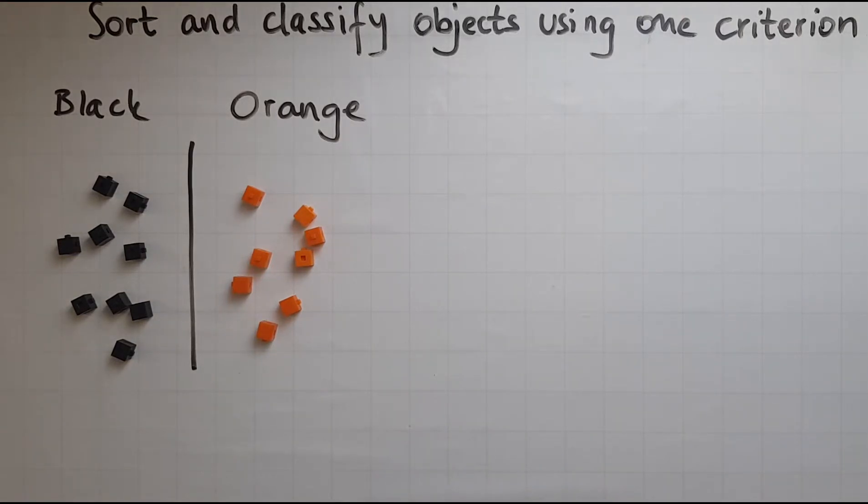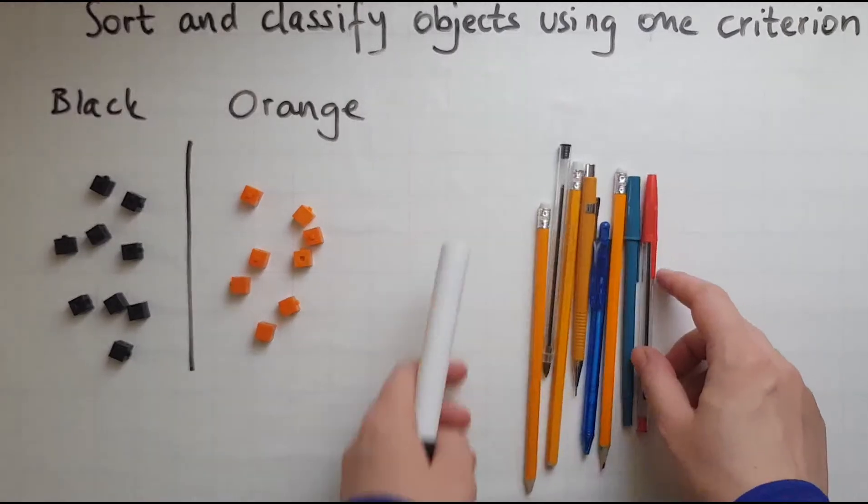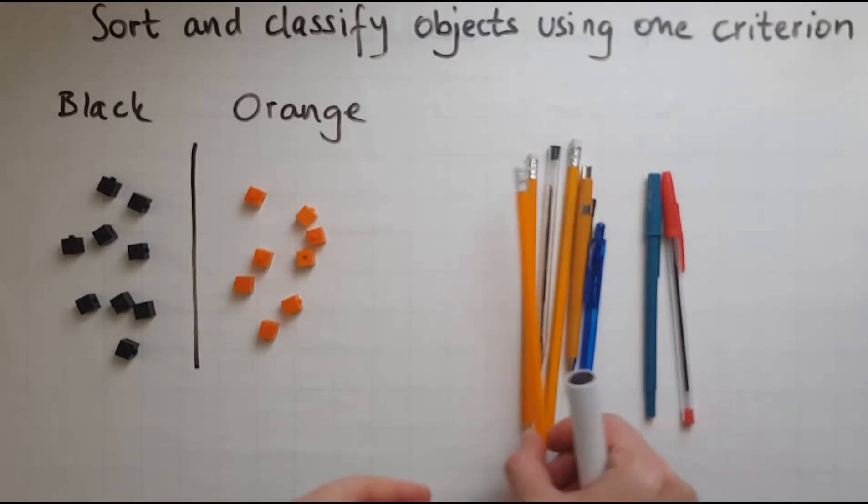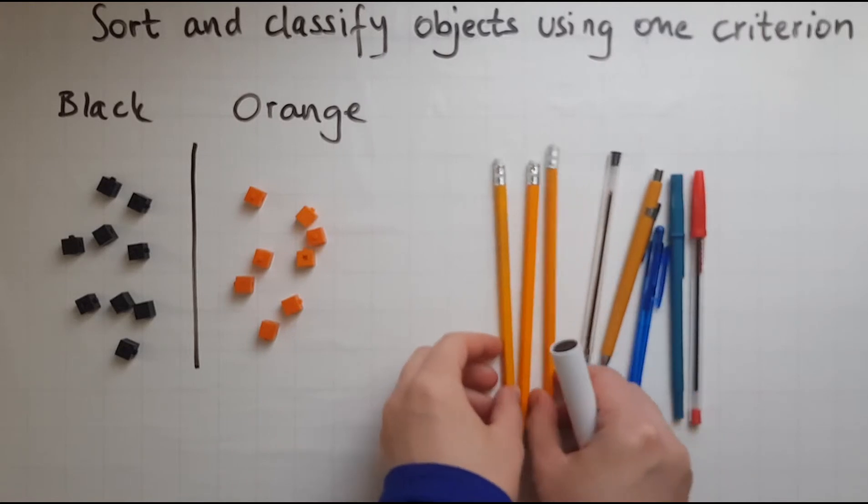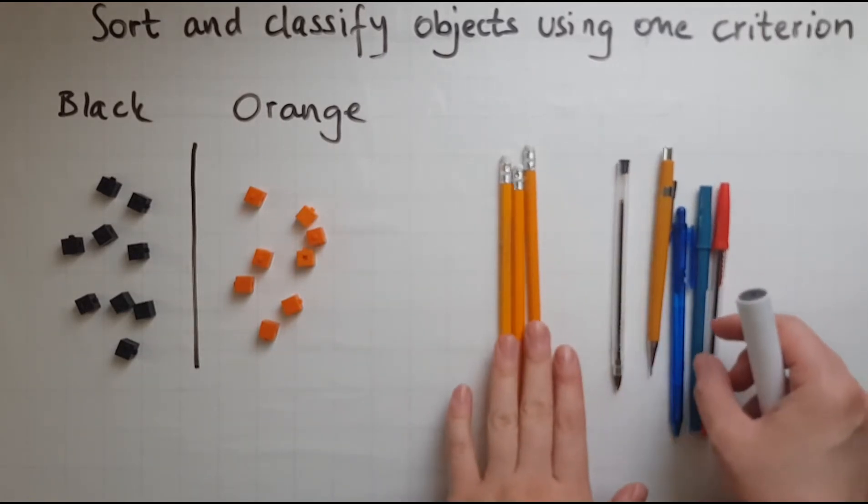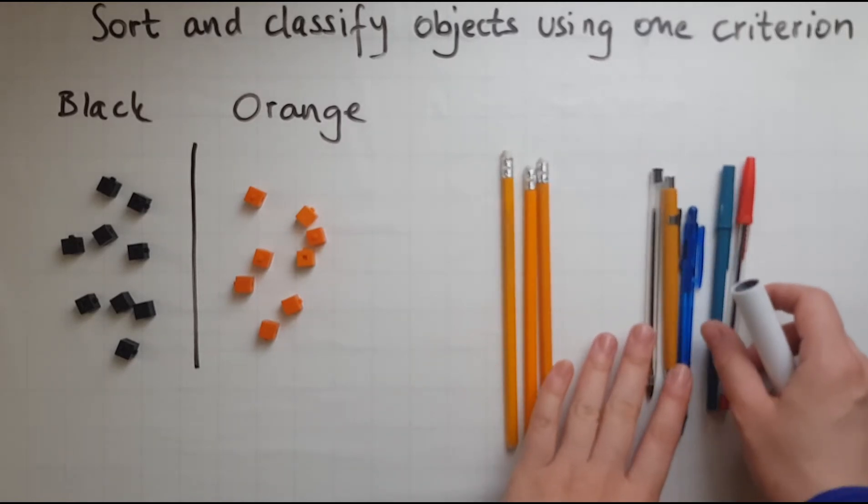Now I have some more items which I want to sort. As you can see I've got pens and pencils. So there are some pencils which I'm gonna separate and some pens. That is what is different.